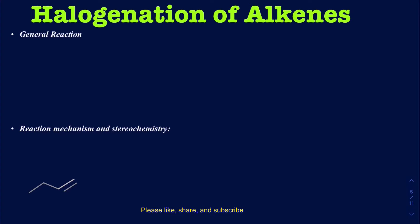Hello everyone. In this video, we're going to be talking about addition of halogens onto alkenes, and those reactions are going to be called the halogenation of alkenes. If I take a generic example, we have ethene — CH2 double bond CH2 — and I'm going to add some sort of halogen, X2. This X2 is either going to be Cl2 or Br2; those are the two most commonly used. This reaction is done in the presence of a non-polar solvent, typically carbon tetrachloride.